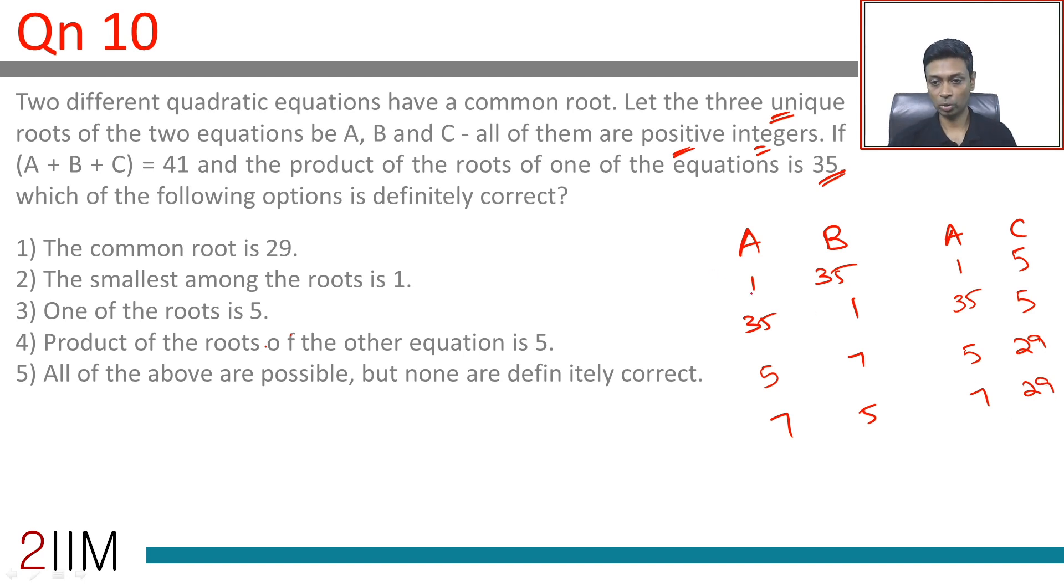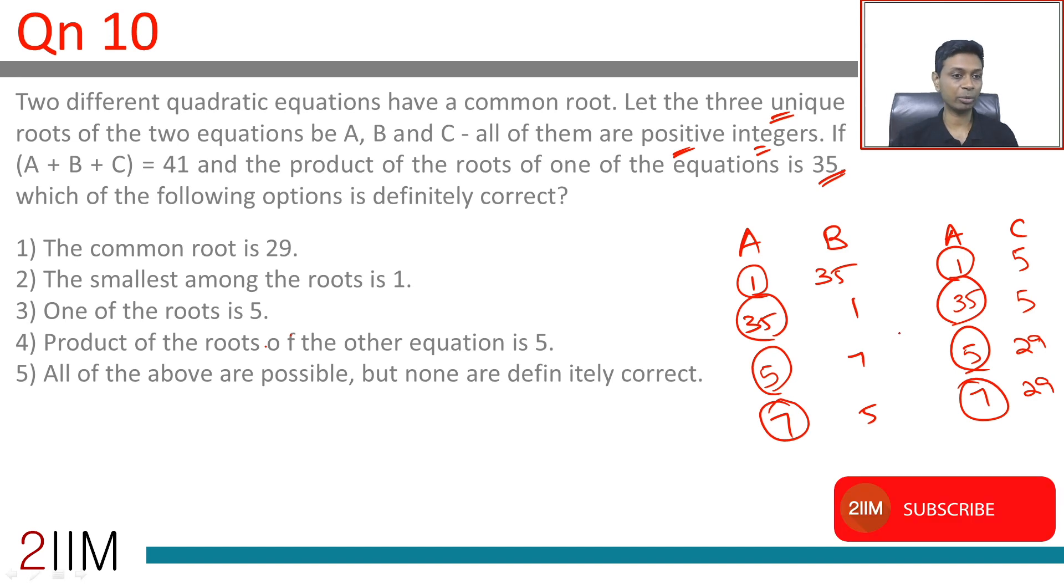This is a common root - remember I'm putting A here. Common root, common root. 5, 5, 7, 7. So for all combinations we have, we have reimagined, we have figured out what value of C could be there, because A plus B plus C is 41.